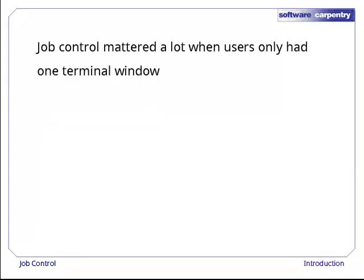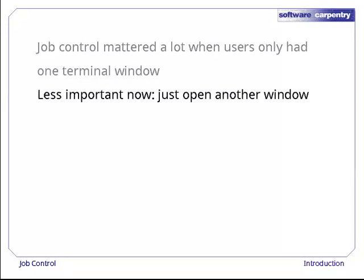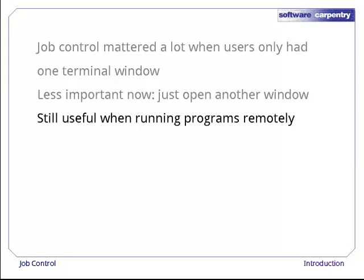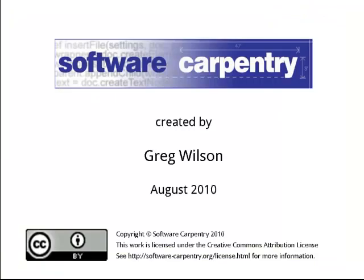Job control was important when users only had one terminal window at a time. It's less important now — if we want to run another program, it's easy enough to open another window and run it there. However, these ideas and tools are making a comeback, as they're often the easiest way to run and control programs on remote computers elsewhere in the network. A future episode will take a look at how we can do that securely. First, though, we need to look at shell variables.